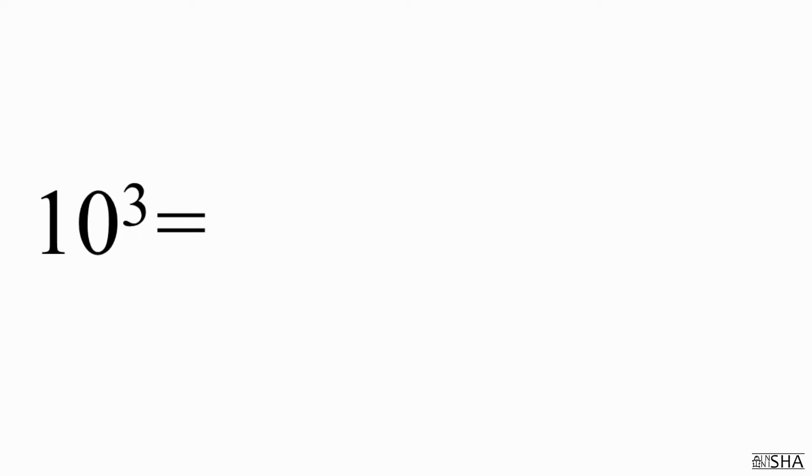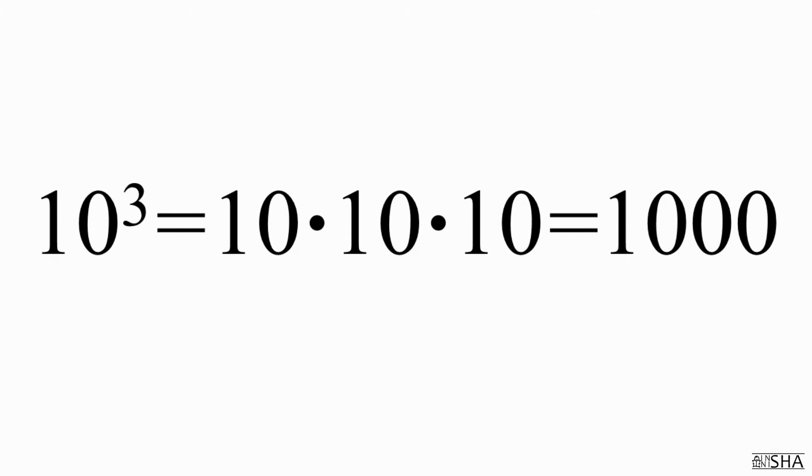When it's written that ten is raised to the power of three, it means that ten should be multiplied three times. And that will give us one thousand. Ten is the base, and three is the exponent, or power. In this case, the exponent tells you how many zeros are going after the one.